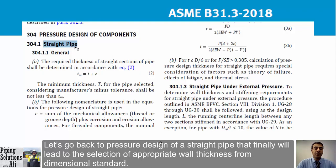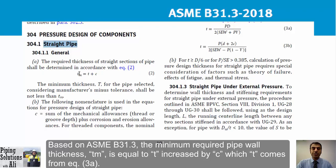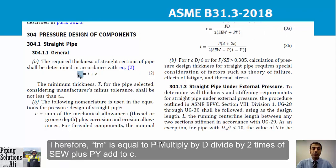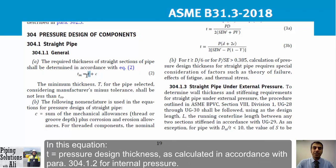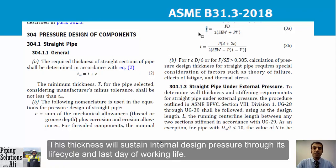Now let's return to pressure design of a straight pipe, which leads to selection of the appropriate wall thickness from the dimensional standard. According to ASME B31.3, the minimum required pipe wall thickness tm equals t plus c, where t comes from Equation 3a. Therefore: tm = (P × D) / (2 × (SEW + PY)) + c. Here t is the pressure design thickness calculated per paragraph 304.1.2 for internal pressure.